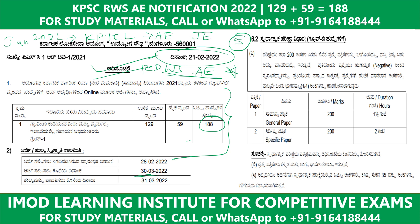The previous exam pattern has 100 questions. The first paper is the general paper. The previous KPD and RR pattern is the same. There are two negative marks. The second one is the specific paper, and the material paper covers the R subjects.